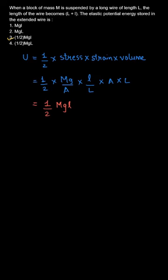If you see over here, this capital L and capital L will get cancelled out. Your capital A and capital A will get cancelled out. So you are left with half into mg into L. So your total elastic potential energy stored in the extended wire will be half mg L.